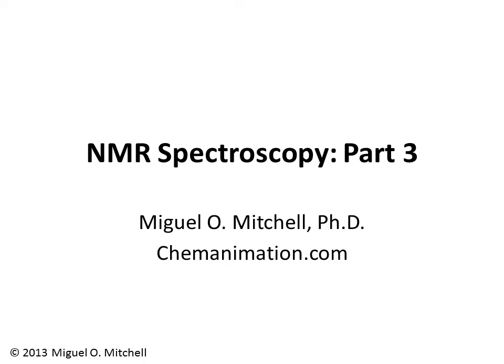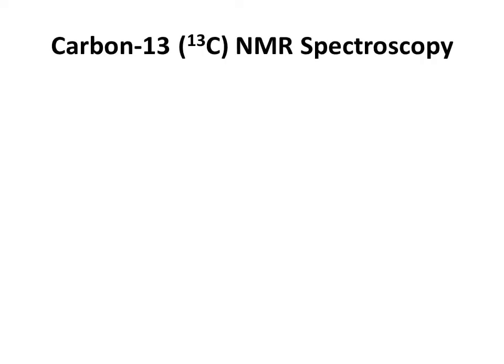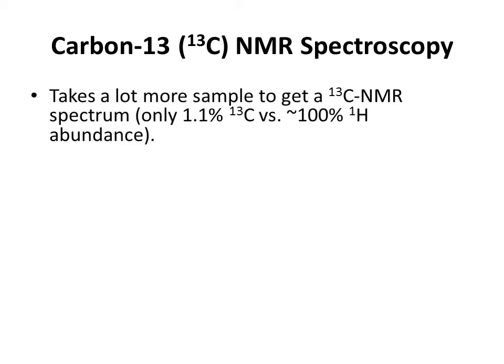This lecture is on NMR spectroscopy, part 3. In NMR spectroscopy lectures parts 1 and 2, there was a discussion of proton NMR spectroscopy. This time, we're going to talk about carbon-13 NMR spectroscopy. It takes a lot more sample to get a carbon-13 NMR spectrum, because there is only about 1.1% carbon-13 on Earth versus about 100% proton availability.